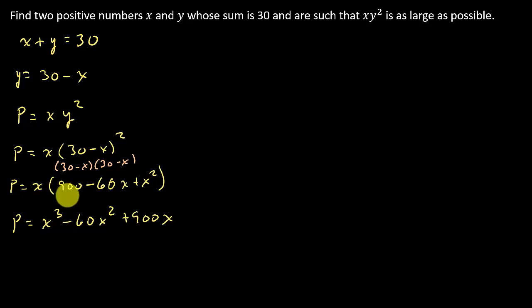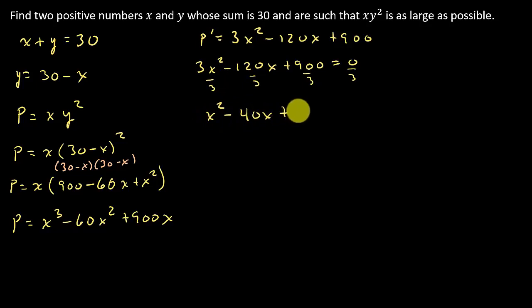So now let's take the derivative. So I get p prime is equal to 3x squared minus 120x plus 900. And then what I want to do is set this equal to 0 and solve for x. So 3x squared minus 120x plus 900 equals 0. And then what I'm going to do is I'm going to divide everything by 3, make it easier to factor if it factors. And so that's x squared minus 40x plus 300 equals 0.